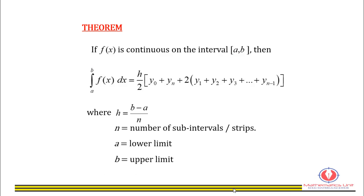If f(x) is continuous on the closed interval a to b, then the definite integral of f(x) from a to b is given by h over 2 multiplied by the total of the first ordinate y₀ and the last ordinate yₙ and twice the total of the ordinates in between.